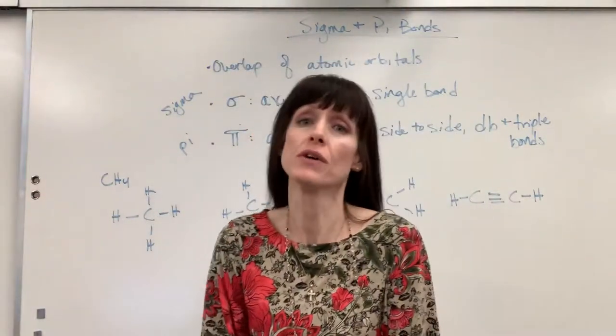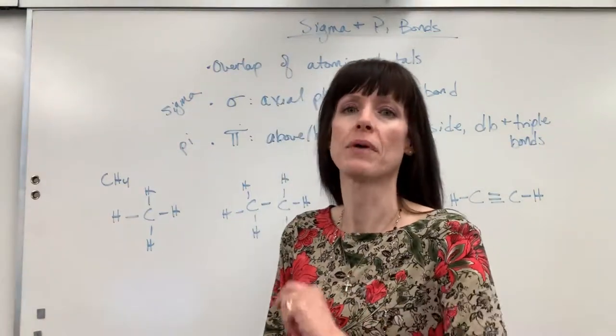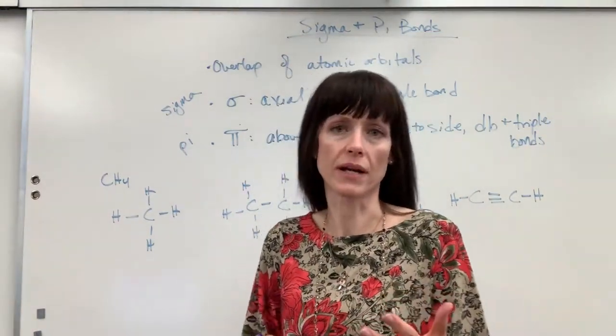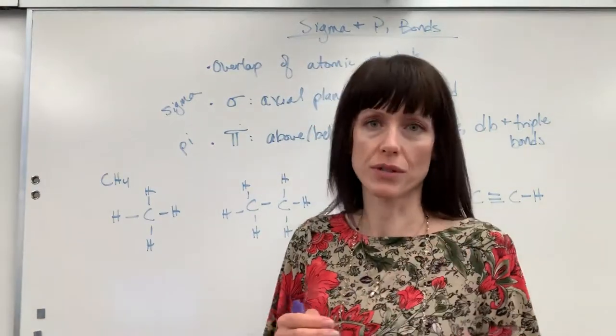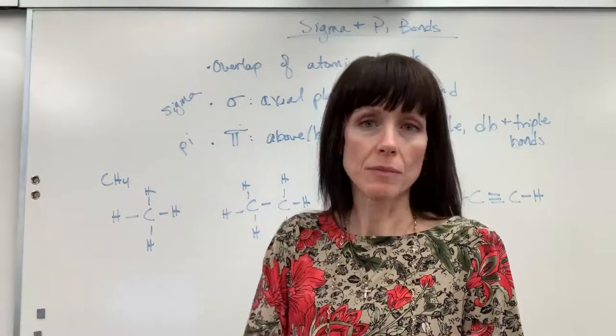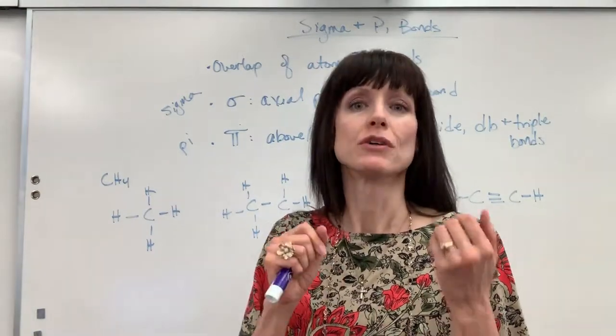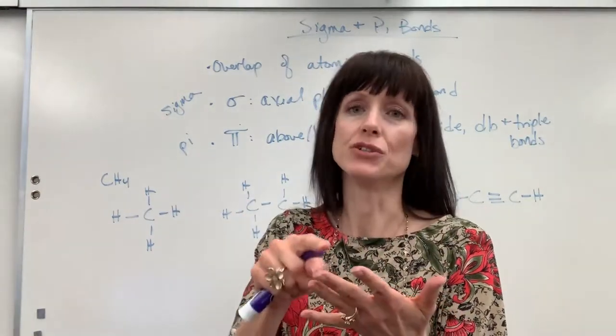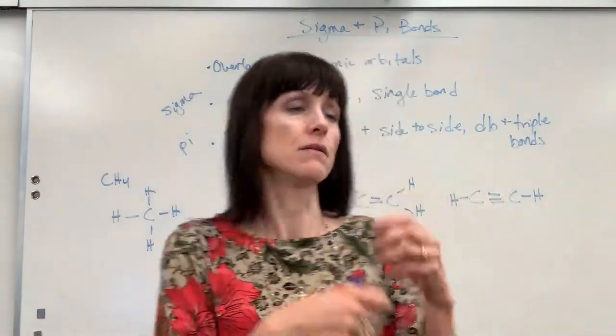Now this is what you'll be asked. You'll be asked how many pi, how many sigma bonds are there. That's really what you're going to have to do. So here's the quick, dirty way to do it. Single bonds are always sigma. Double bonds have a sigma and a pi. Triple bonds have a sigma and two pi. And I'll show you how I write this so that you can keep it straight.